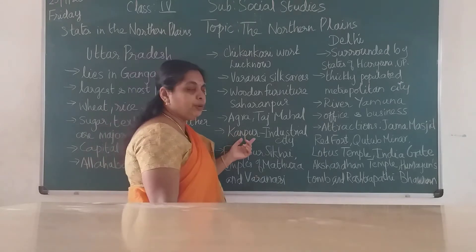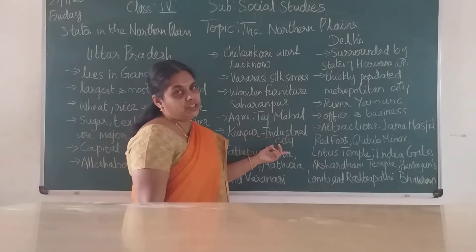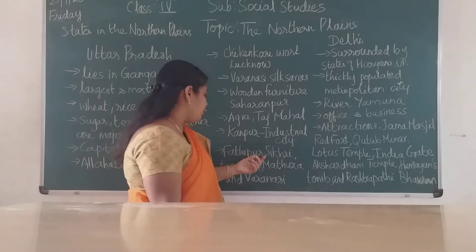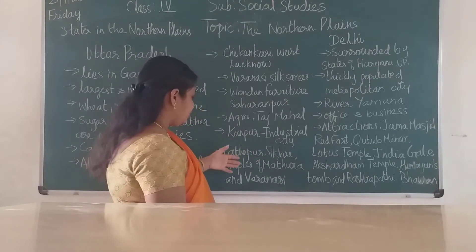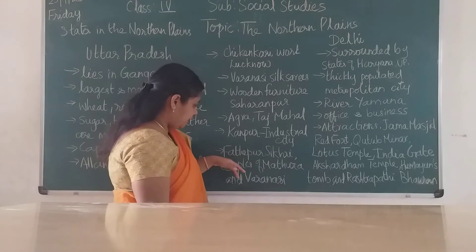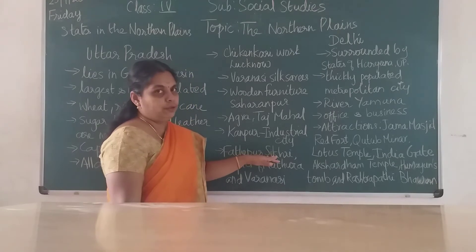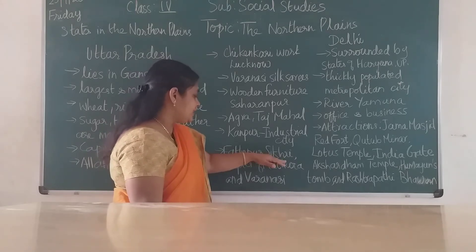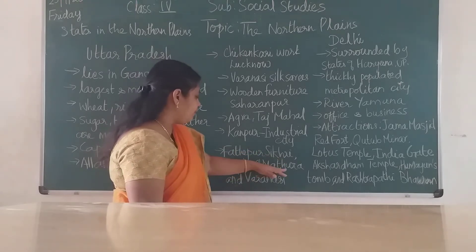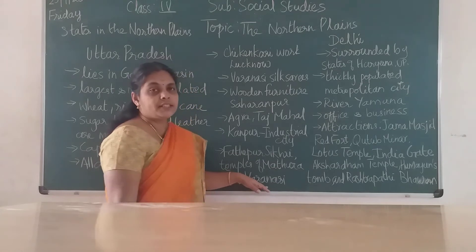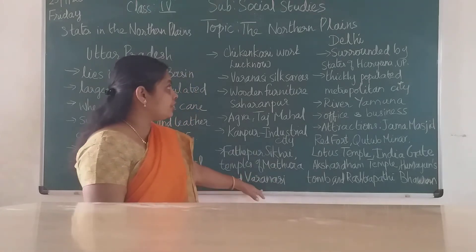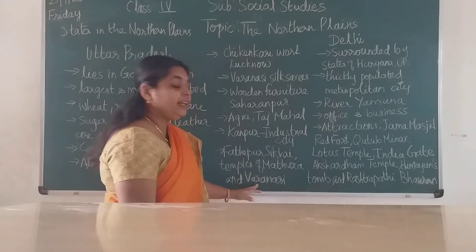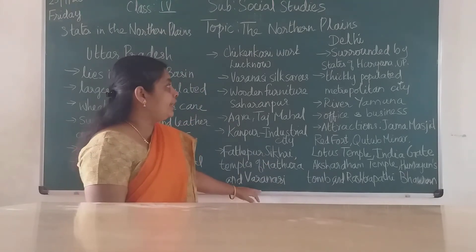Then you have Kanpur, which is an industrial city with many industries. There are also famous tourist places like Fatehpur Sikri, which was built by Akbar. The temples of Mathura and Varanasi are also very famous.